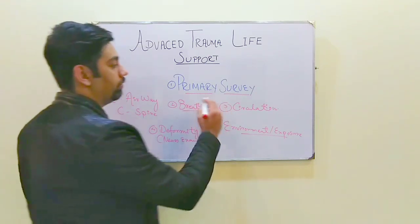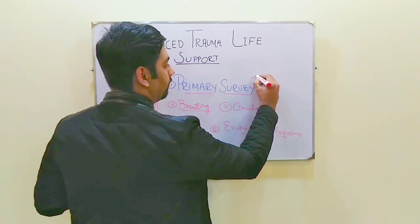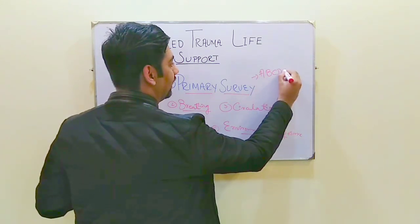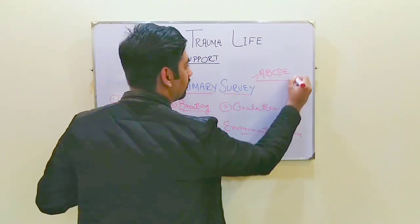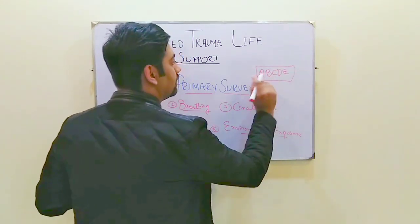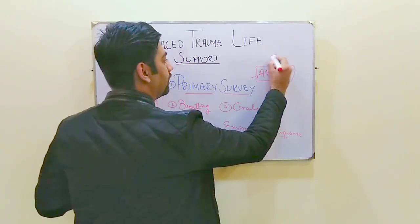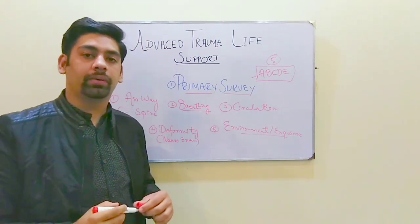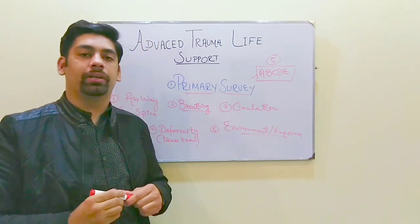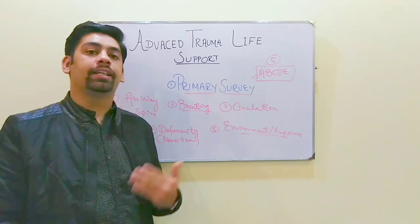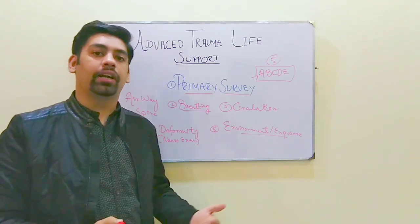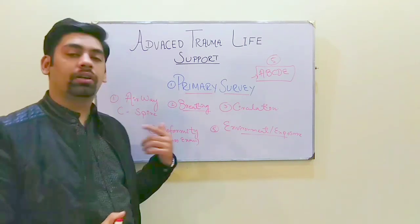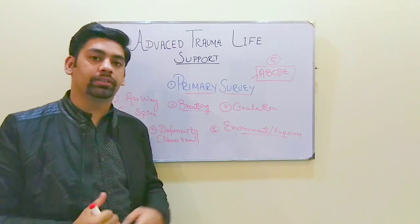The mnemonic for the primary survey is A, B, C, D, and E. These are the five conditions which are addressed in the primary survey. I will now explain in detail each condition and the basic components of each one.